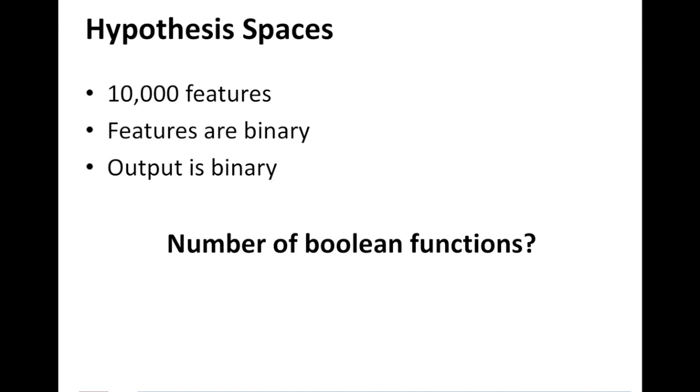Now scale this to a more realistic dataset. Suppose you have a biology DNA sequencing dataset. 10,000 features is actually a low number there. Suppose you have a vision dataset. You want to look at different pixels. You think 10,000 features is going to cut it? These days we look at megapixels, nanopixels, and so on and so forth. 10,000 is really a small number when it comes to what machine learning can do. So 10,000 features, and even if features are binary, which is not true in the real world, and even if the output is binary, which also may not be true in the real world, even then, which is the smaller side of a realistic dataset, how many Boolean functions are needed?